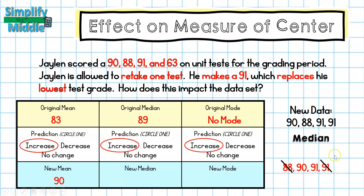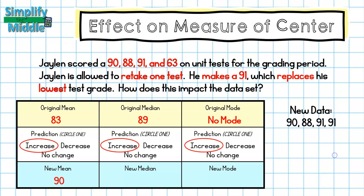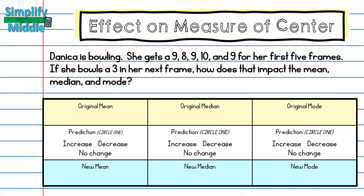I'm left with 90 and 91 as my two middle numbers. I add those together and divide by 2 — or I can recognize that the midpoint between 90 and 91 is 90.5. So my median did increase a little bit. And my new mode is 91.